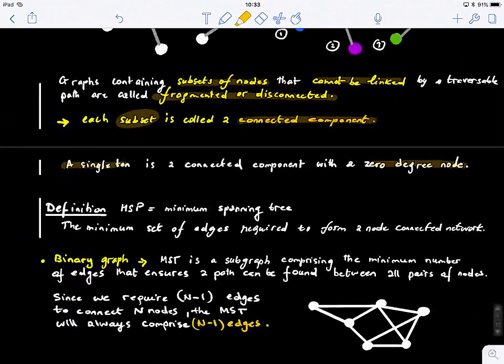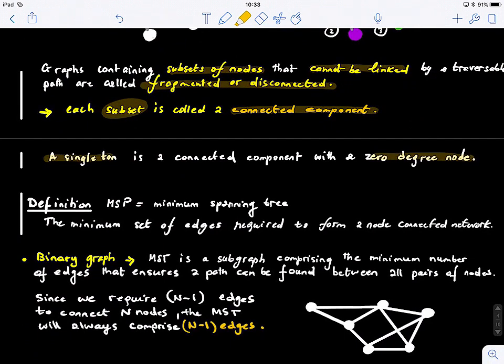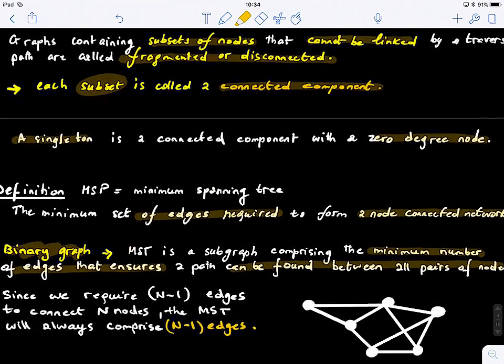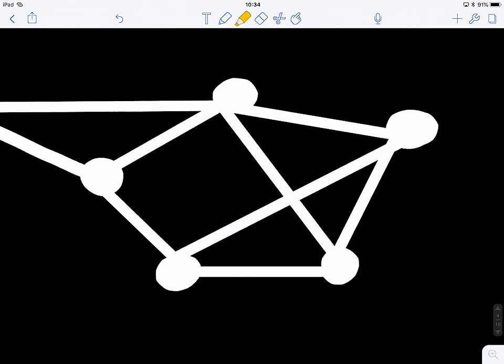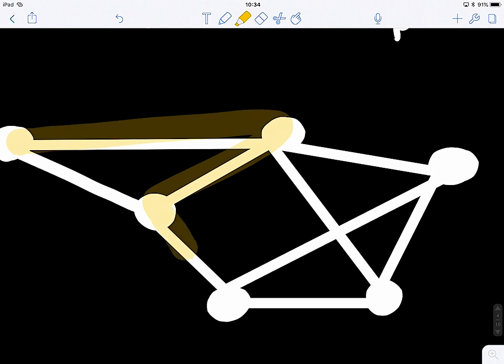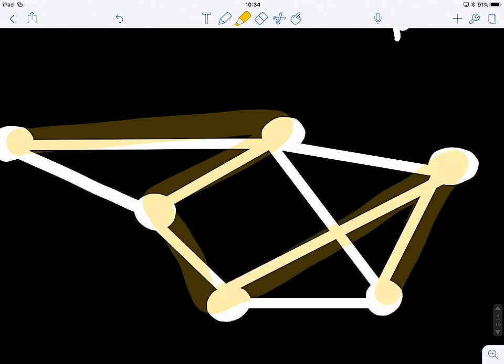But let's look at this definition. So now what we have, we have different connected components. And we want to look at the minimum spanning tree. So the minimum spanning tree is the minimum set of edges required to form a node connected network or a node connected graph. So in a binary graph, a minimum spanning tree is a subgraph comprising the minimum number of edges that ensures a path can be found between all pairs of nodes. So in a binary graph like this one, if we have n minus one edges. So what is the length of the MST, the minimum spanning tree of this graph? So basically it's a pathway that goes from one node and connects all other nodes in the graph. What is the size? How many edges in that spanning tree? If we have n nodes, it's n minus one, yes. So it's n minus one, giving that we have n nodes.